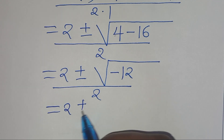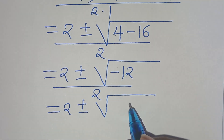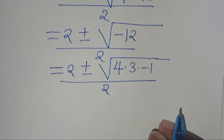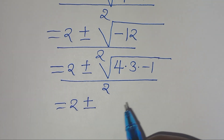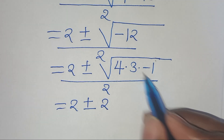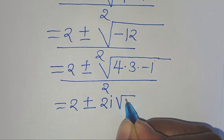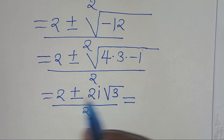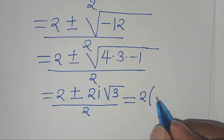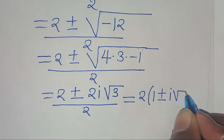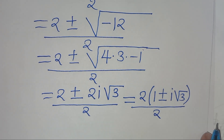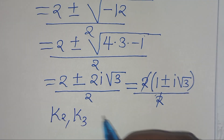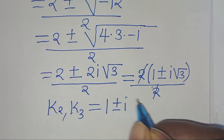We have 2 plus or minus the square root of minus 12. We can express the square root of minus 12 as the square root of 4 times 3 times minus 1. The square root of 4 is 2, the square root of minus 1 is i, then square root of 3. From the numerator we can factor out 2, giving 2 times (1 plus or minus i square root of 3), divided by 2. Simplifying, k2 and k3 equal 1 plus or minus i square root of 3.